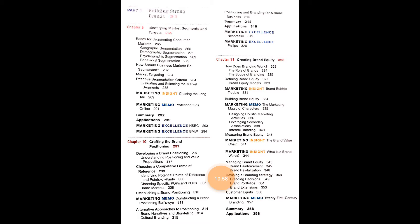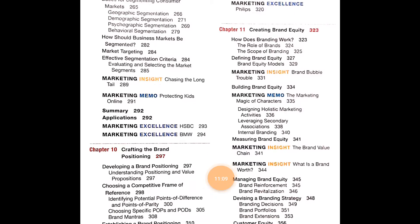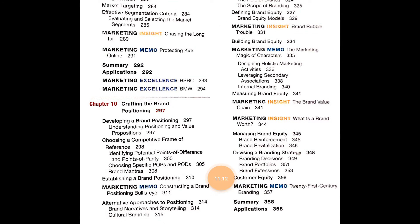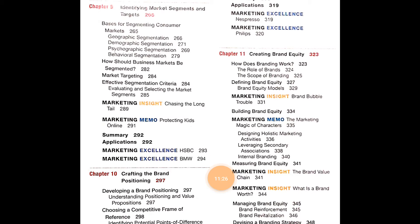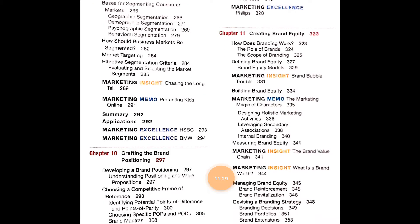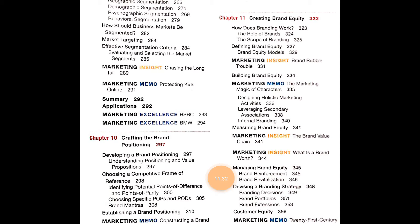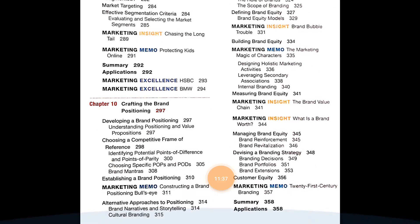Chapter 9, which begins Part 4 Building Strong Brands, covers Identifying Market Segments and Targets, including Marketing Insights, Marketing Memo, psychographic segmentation, and behavioral segmentation. Chapter 10 is Crafting the Brand Positioning. Chapter 11 is Creating Brand Equity, covering how branding works, defining brand equity, Marketing Insights, designing holistic marketing activities, leveraging secondary associations, and internal branding.